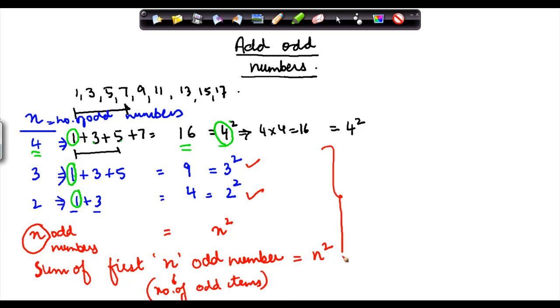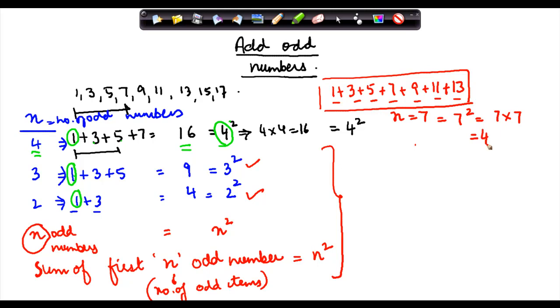So suppose this will apply true for any number of things. Let's say I will do this as 1 plus 3 plus 5 plus 7 plus 9 plus 11 plus 13. Now here how many numbers do I have? 1, 2, 3, 4, 5, 6, 7. So n equals 7 here. So the sum of all these 7 odd numbers has to be equal to 7 squared, which is 7 times 7, which equals 49.